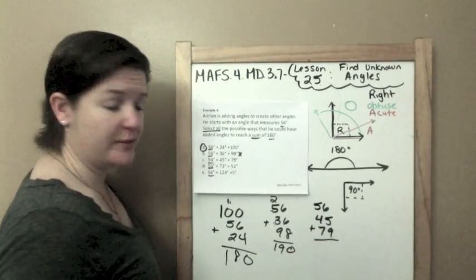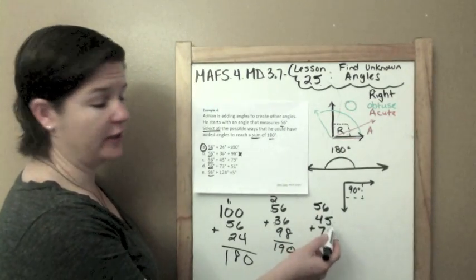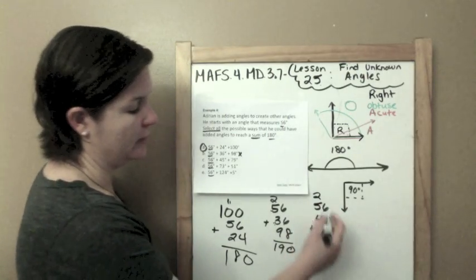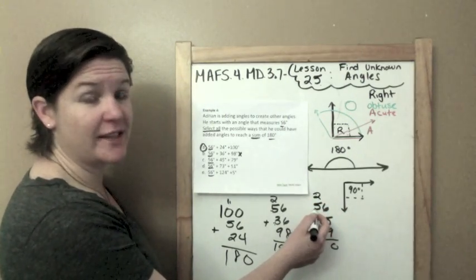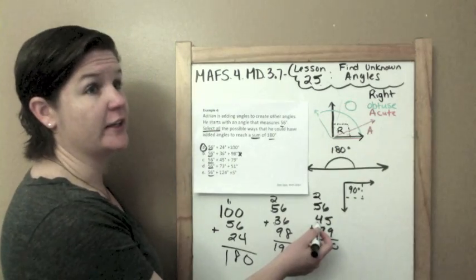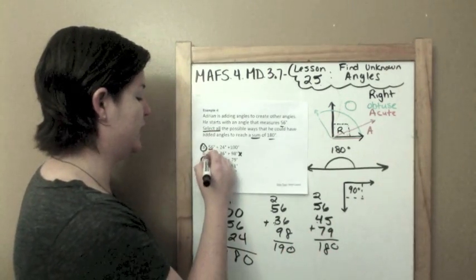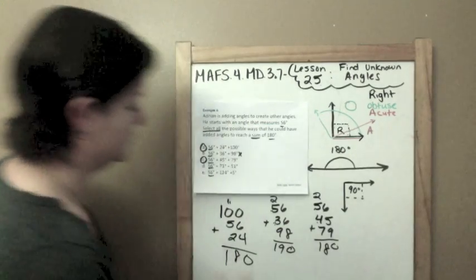All right. 6 plus 5 is 11. 11 plus 9 is 20. 2 plus 5 is 7. Plus 4 is 11. Plus 7 is 180. So C is an answer. I'm going to erase.